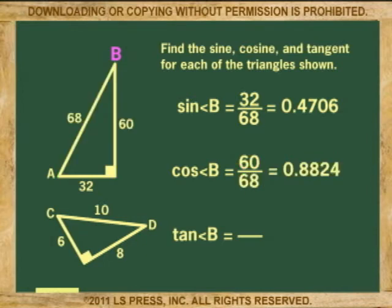Now to the tangent of angle B. The tangent of angle B is the reciprocal of the tangent of angle A. So if the tangent of angle A was 60 over 32, then the tangent of angle B is 32 over 60, or 0.5333.